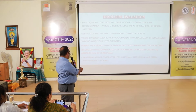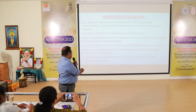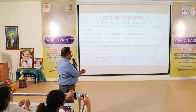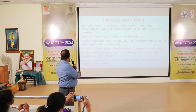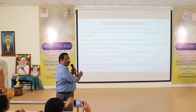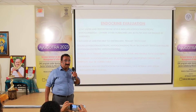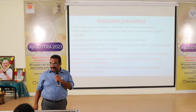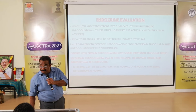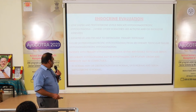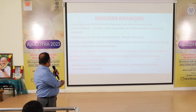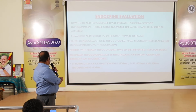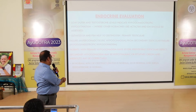Secondary hypogonadism may be of hypothalamic or pituitary origin, and infertility may be correctable. Pre-testicular causes can be corrected — effective treatment is available, especially in modern medical science. In normal men, FSH, LH, and testosterone will all be normal.